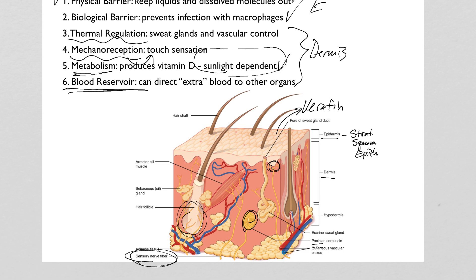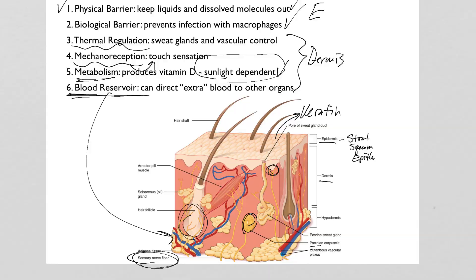The skin also acts as a blood reservoir. If you're having a fight-or-flight response — running from a bear or escaping a burning building — your sympathetic nervous system activates and you want maximum blood flow to your muscles, brain, and heart. The blood reservoir function means we can constrict those skin blood vessels with smooth muscle and redirect blood away from the skin toward muscles, brains, and hearts. If the skin is a little short on blood flow for a while, it's not a big deal.